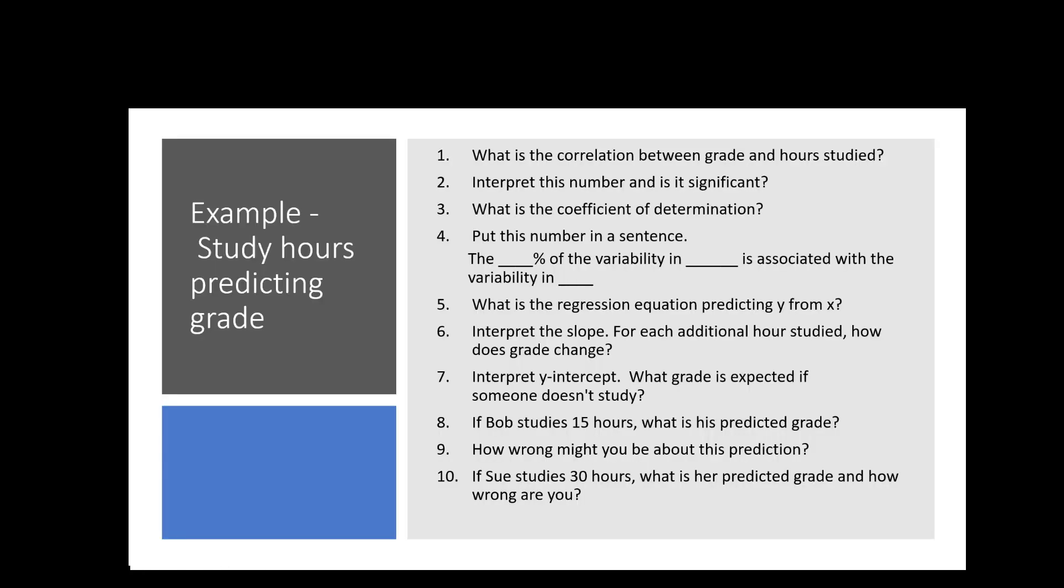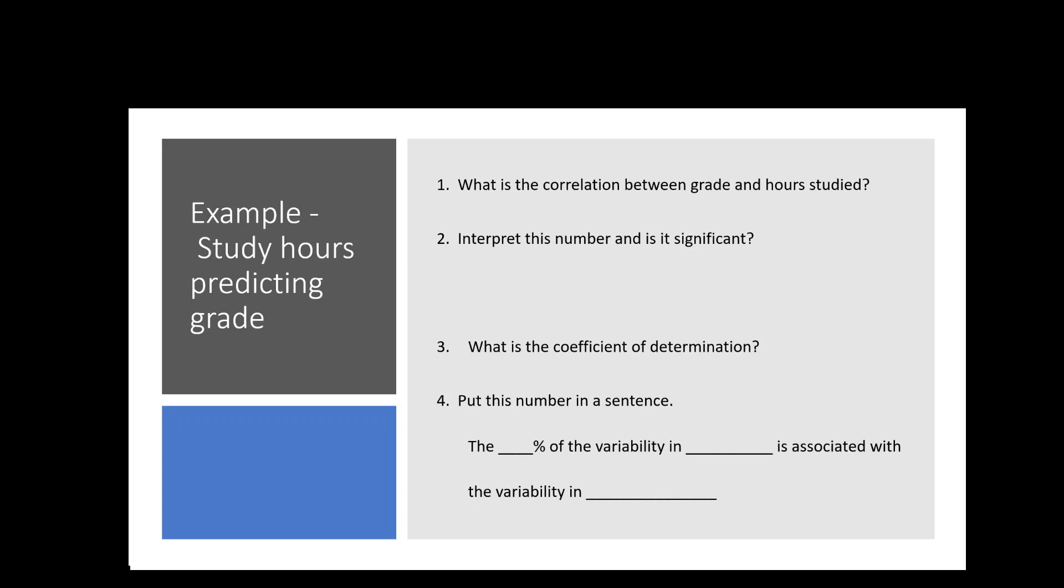So these are all the questions we have for the example for study hours predicting your exam grade. I'm going to walk through them one by one, but now you have them all kind of in your notes if you would like to go back and review. So the first question is, what is the correlation between grade and hours studied? We saw in our JASP output the correlation was 0.707. So that's what I'm looking for there.